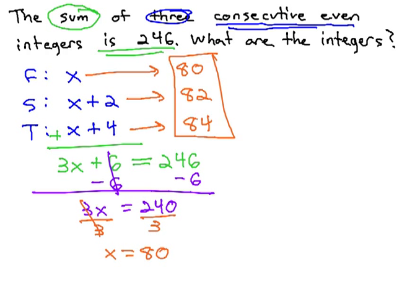By clearly identifying the three integers and using the information in the problem, we were able to make an equation we could solve to find our numbers. Be sure once you find x, you also identify the other two numbers.